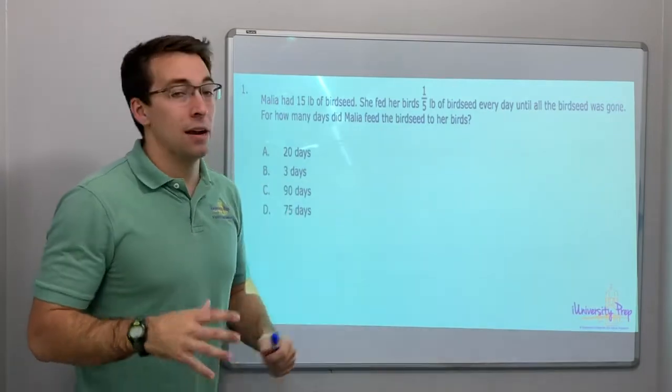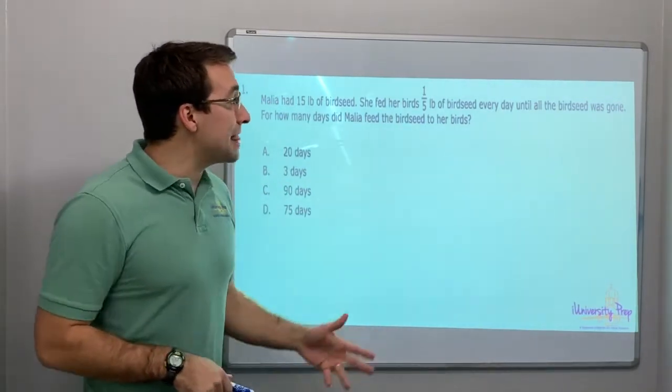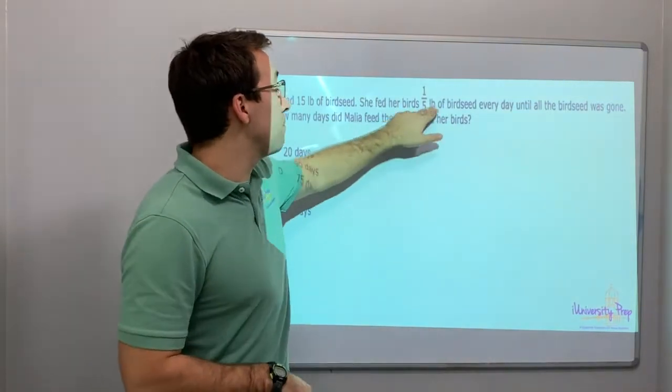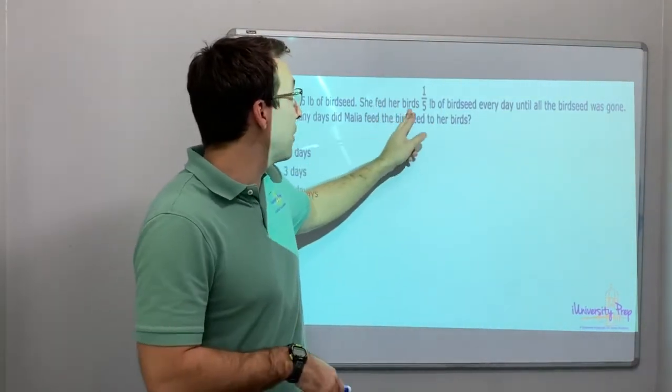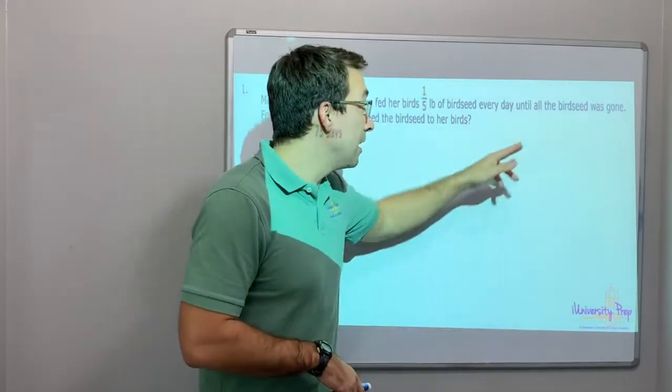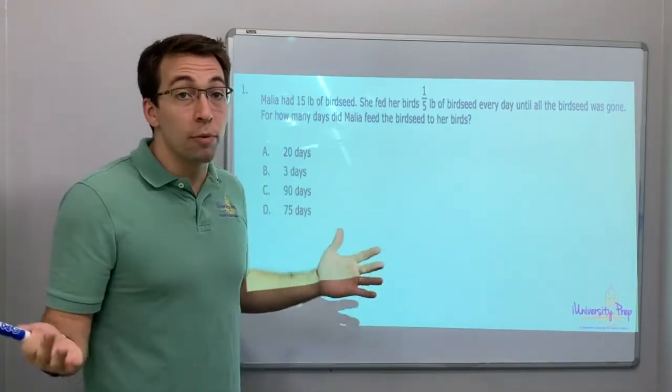Malia had 15 pounds of birdseed. She fed her birds one-fifth of birdseed, one-fifth pound, fifth pound every day. She had 15 pounds of birdseed. She fed her birds one-fifth of a pound every day until the birdseed was gone. For how many days did Malia feed the birdseed to her birds?